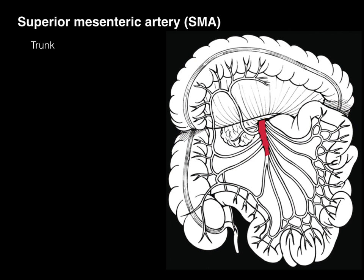The trunk of the SMA arises right below the celiac trunk from the abdominal aorta. It courses over the third part of the duodenum, and then the first branch is the inferior pancreaticoduodenal artery. That's the one that supplies the anastomotic connection with the superior pancreaticoduodenal artery, which is arterial supply from the foregut.